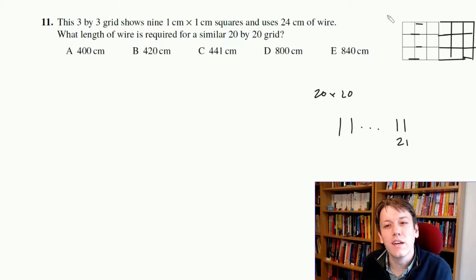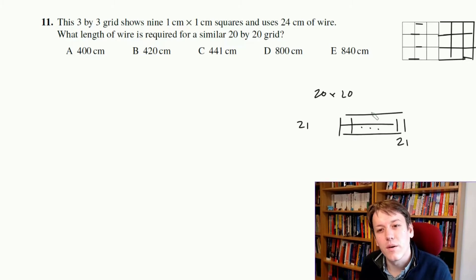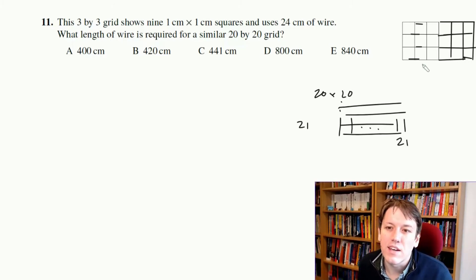There would also be 21 going up in this grid, so actually what I need here is, but the actual length of each of these lines is still 20 centimetres, so here I had 4 lines of 3 centimetres, and I do that twice.